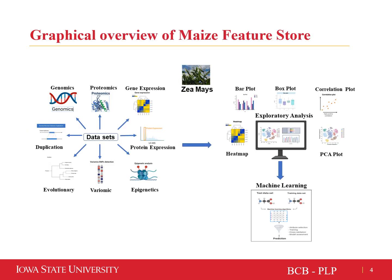This is the graphical overview of Maize Feature Store. It comprises three main modules: the feature module, the downstream analysis module, and the modeling module. We assembled omics features associated with each gene model in Zea mays based on various sources, as indicated by the dataset arrows in the figure.